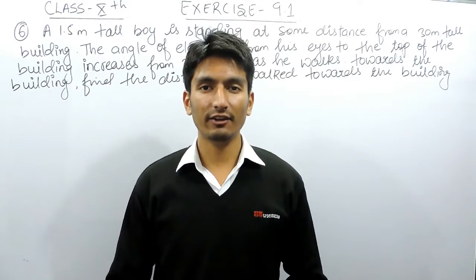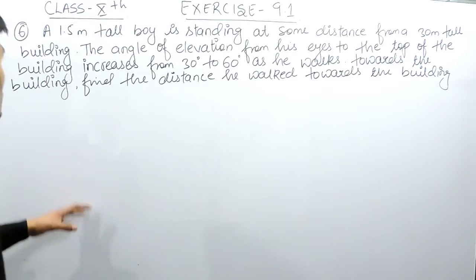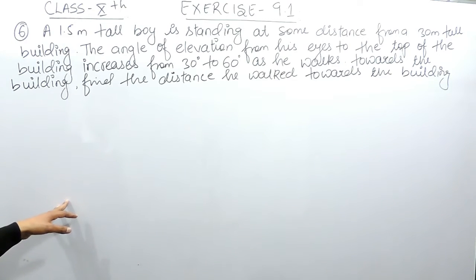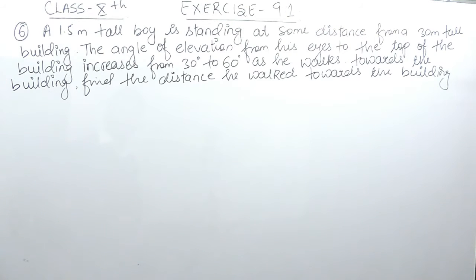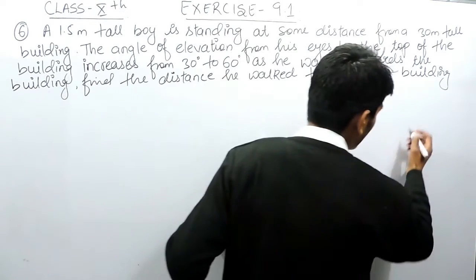Hello everyone, we are from True Maths and in this video we are going to solve question number six of exercise 9.1. The question says: a 1.5 meter tall boy is standing at some distance from a 30 meter tall building. The angle of elevation from his eyes to the top of the building increases from 30° to 60° as he walks toward the building. You have to find the distance he walked toward the building.